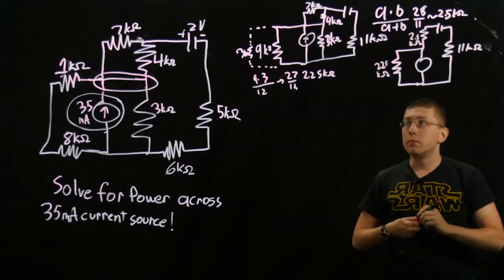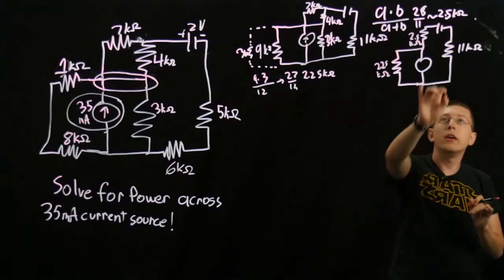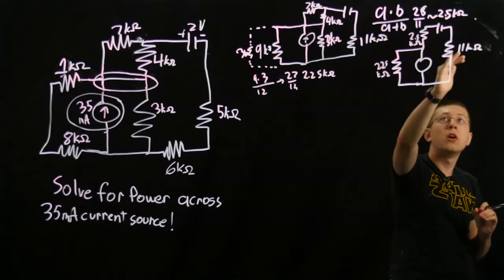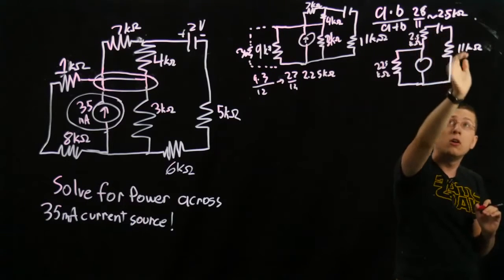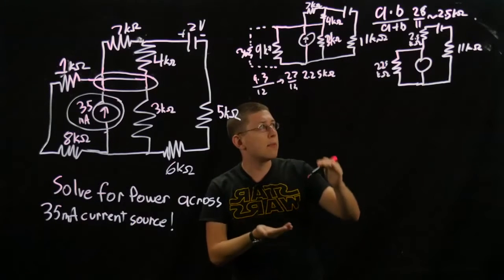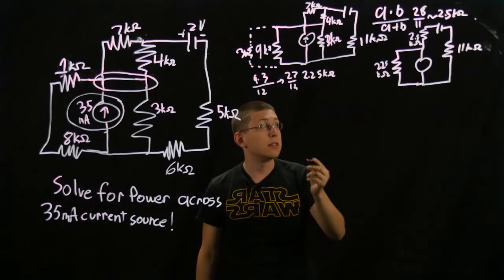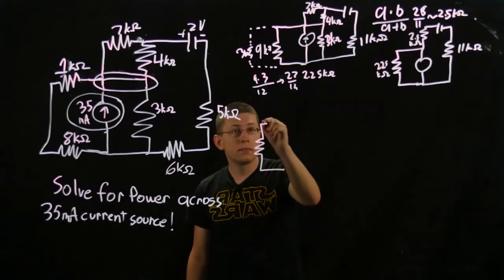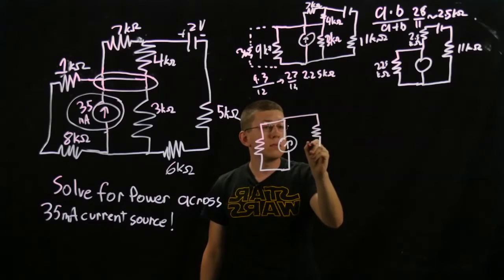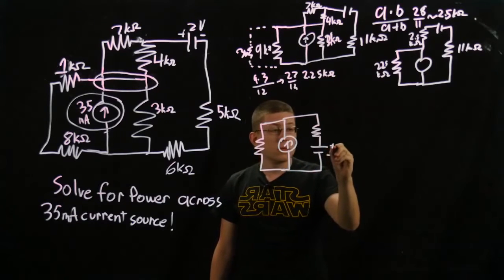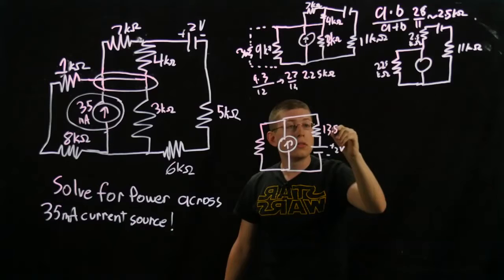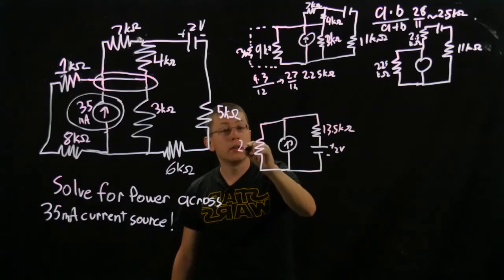From here, we again see two resistors in series. You can redraw these on either side of the voltage source — it really doesn't matter, it's the same thing. So 11 plus 2.5 gives us 13.5k ohms. And here we'll have 2.25k ohms. And here we have 35 milliamps. Now that we've simplified these, we're actually going to be able to start doing our nodal analysis.